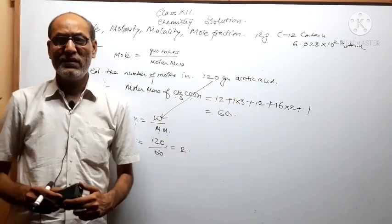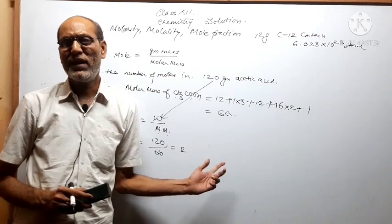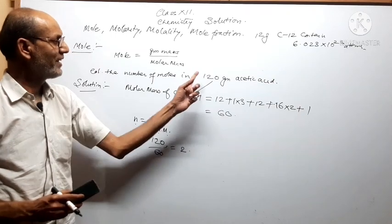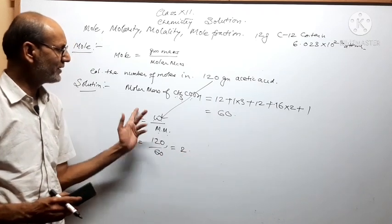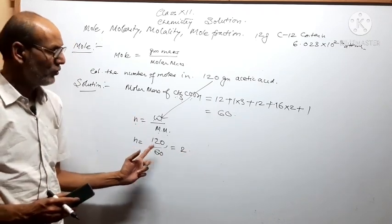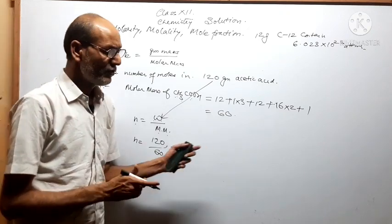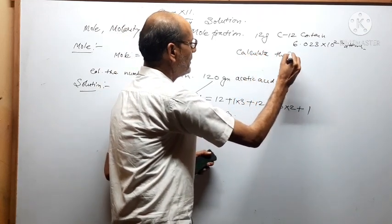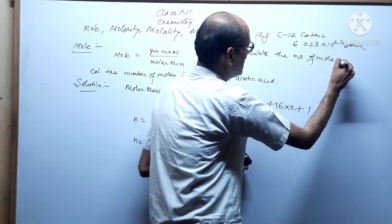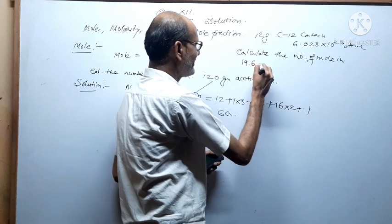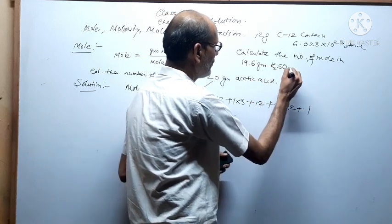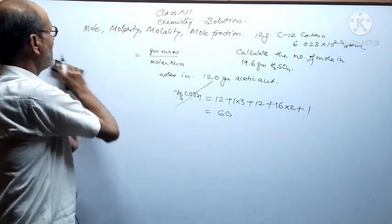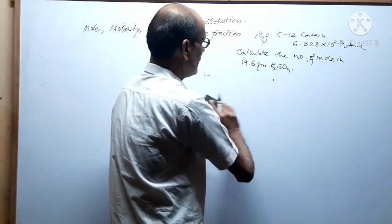Therefore, 120 gram of acetic acid equals 2 moles. Mole is an SI unit and most numerical problems involve moles — if gram is given you can convert to moles easily, and vice versa. Home work question: calculate the number of moles in 19.6 gram H₂SO₄. Now moving towards the next topic, which is molarity.